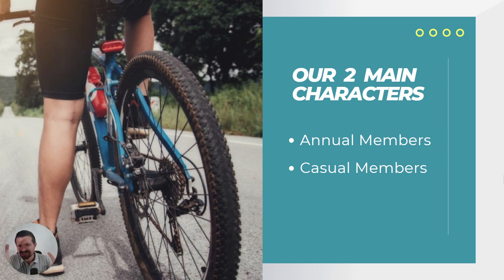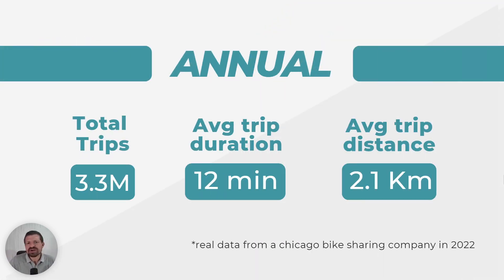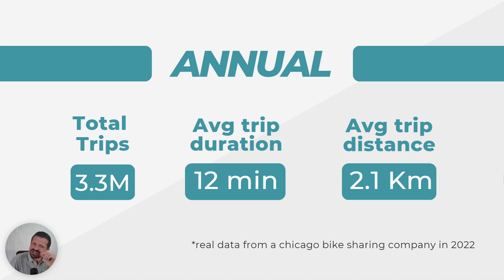Our riders can be broadly categorized into two groups: annual members and casual riders. Annual members are those who have made a long-term commitment to our bikes by purchasing an annual membership. They tend to be more frequent users. Our analysis reveals that annual members have made a total of 3.3 million trips, with an average duration of 12 minutes per ride and an average distance of 2.1 kilometers on each trip.